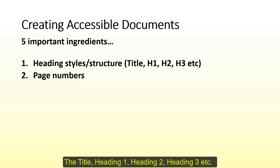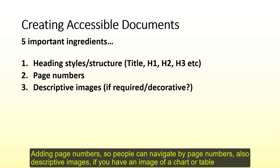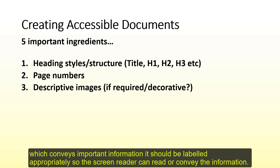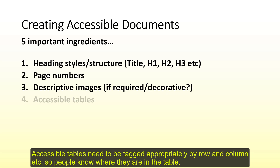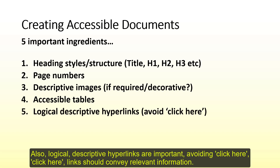Adding page numbers so people can navigate by page numbers. Descriptive images — so for example, if you have an image of a chart or a table and it's conveying important information, then that must be labelled appropriately so that the screen reader or the person can read that information. Accessible tables — so tables need to be tagged to make them accessible, with columns and rows so people know where they are in the table. And particularly logical descriptive hyperlinks, so avoiding 'click here' in documents — hyperlinks must convey logical and descriptive information.